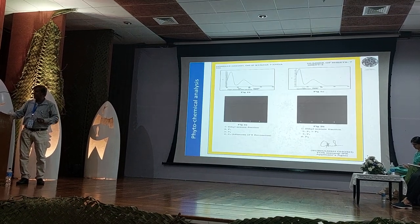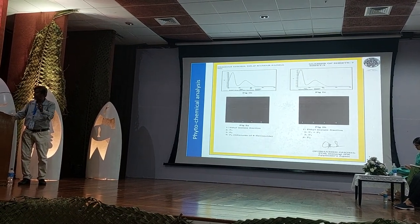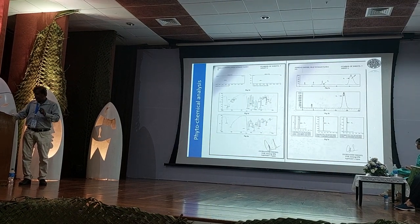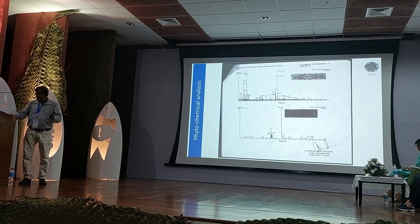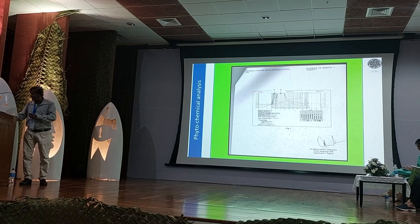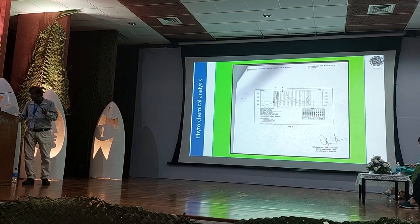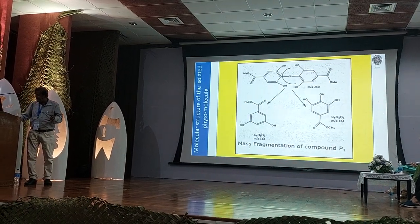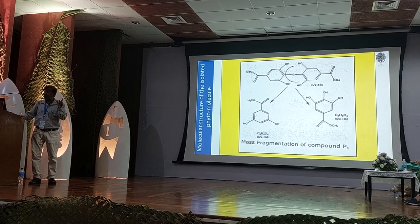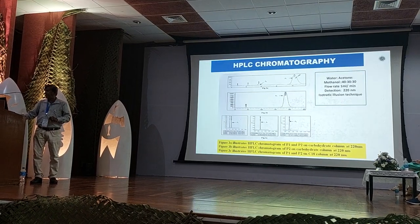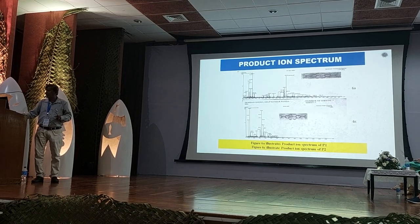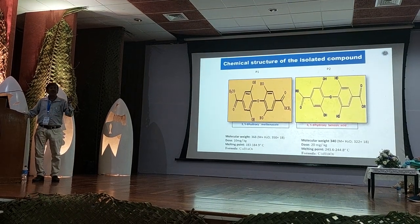This is the chemical characterization process. This is the HPLC study, the infrared spectroscopy, the NMR study, and the HPLC followed by sequence analyzer. This is the mass fragment of the component — that is the P1 and P2 separation. We then identify these two molecules and file the patent.